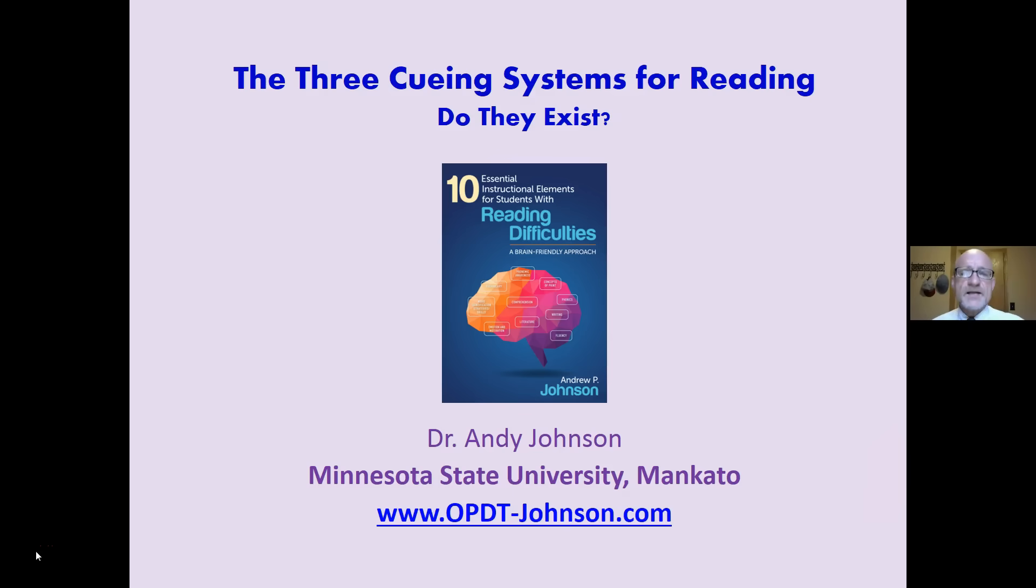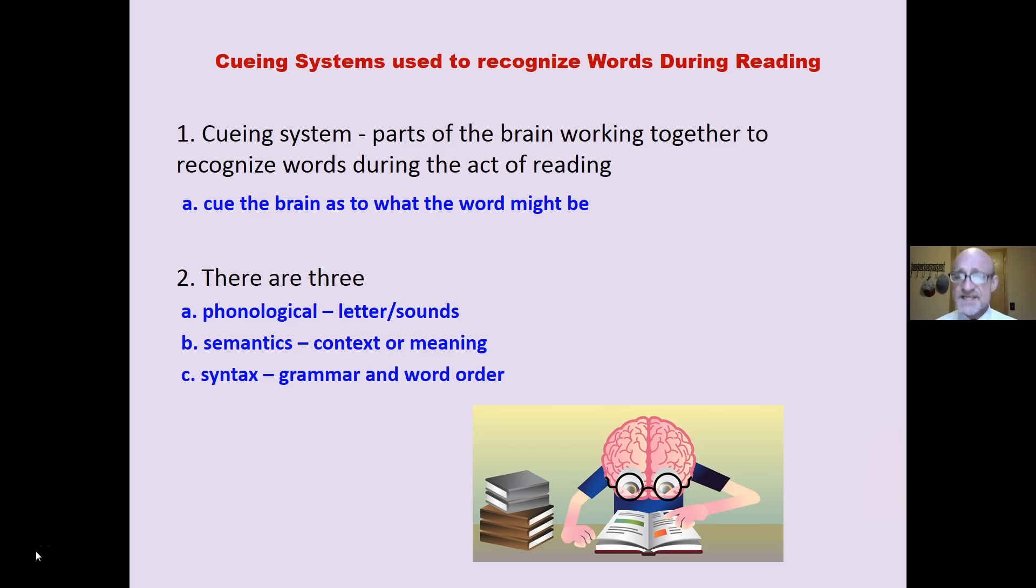Andy Johnson. We are looking at the three cueing systems the brain uses to create meaning with print for reading. Do they exist? Some people say maybe not. Defining our terms, a cueing system is a part or parts of the brain working together to recognize words during the act of reading.